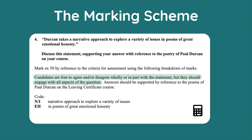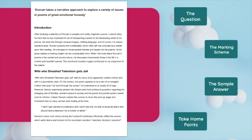The corrector will award you with the code N for any valid points you make in relation to Durkin's narrative approach to explore a variety of issues, and then reward you with the code EH for points made in relation to the emotional honesty present in his poetry. Your goal should be to achieve both of these codes for each of your main body paragraphs — the more codes you're awarded, the higher your grade will be. Now let's jump straight into the sample answer itself.